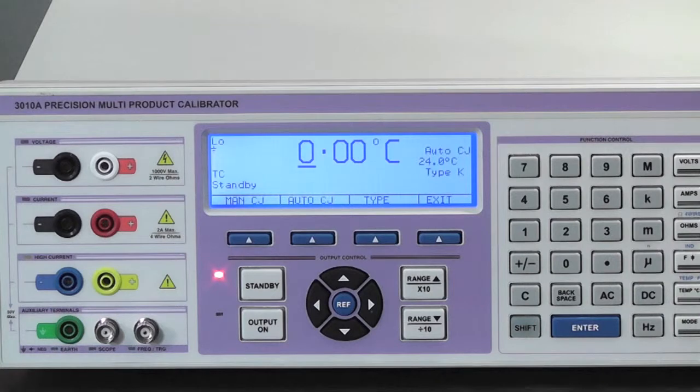To achieve the best accuracy when working with thermocouple calibrations allow all equipment to thermally stabilize. The displayed CJC temperature will help confirm when a stable environment has been achieved.